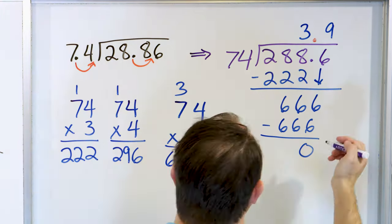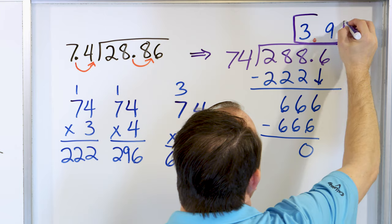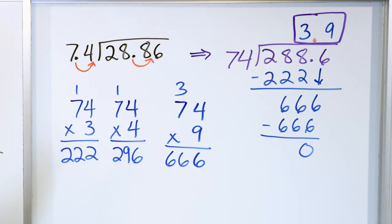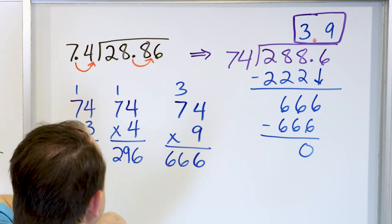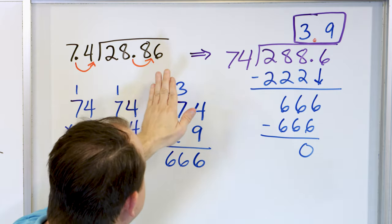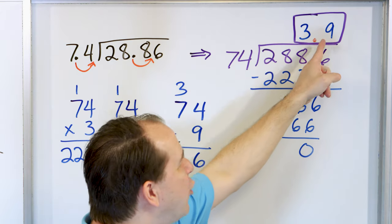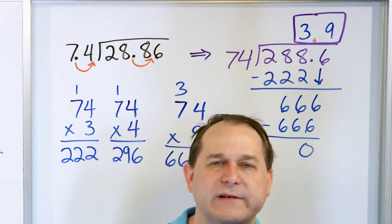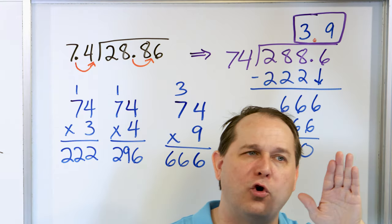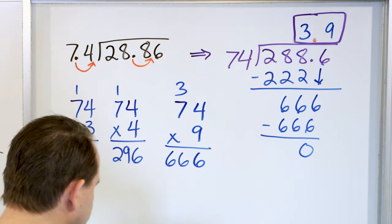So the answer is 3.9. If I were to take 28.86 of something and divide it by 7.4 to see how many times it can fit in, it's telling me it can fit three whole times. Not quite four times, but very close — the 0.9 is telling me it almost goes four times, but not quite. It's not quite enough extra to go a fourth time, but it's very close because it's at 3.9.